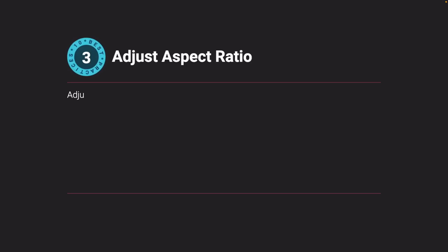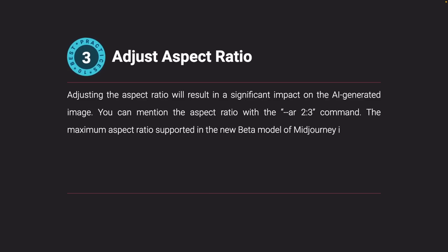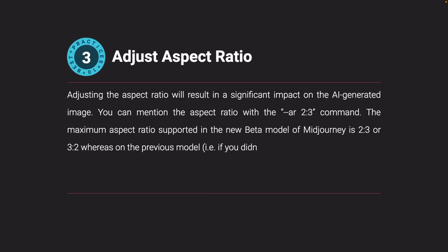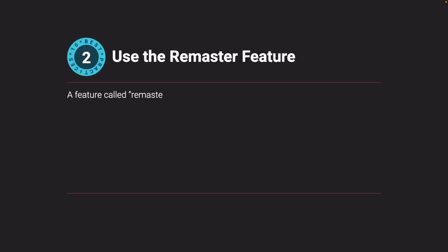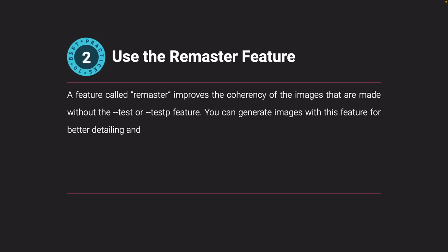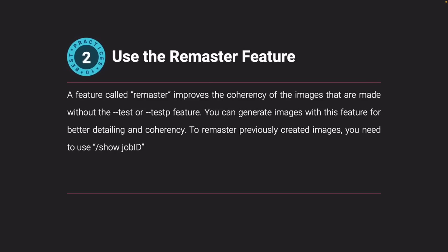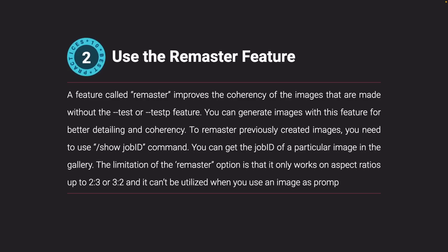Adjust aspect ratio and use the remaster feature. Adjusting the aspect ratio has a significant impact on the AI-generated image — use the 'ar' command, for example 'ar 2:3.' The maximum aspect ratio in the new beta model is 2:3 or 3:2, while the previous model supports up to 16:9 or 9:16. The remaster feature improves coherency of images made without the test feature; to remaster a previously created image, use the '/show job ID' command. Note that remaster only works on aspect ratios up to 2:3 or 3:2 and cannot be used when an image is used as a prompt.